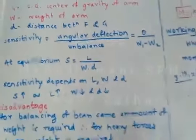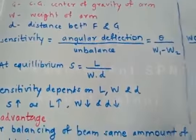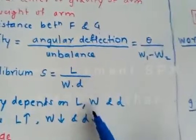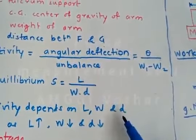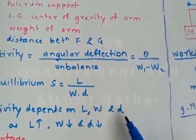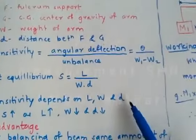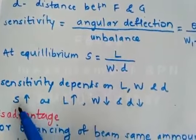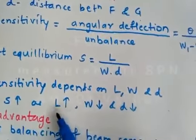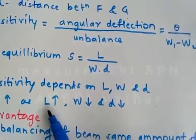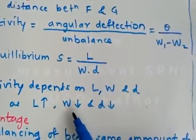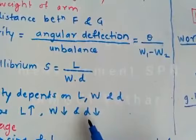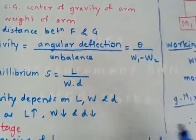Therefore, sensitivity depends only upon the length of the arm, the weight of the arm, and the distance between the fulcrum and the center of gravity. It does not depend upon the force or W1, W2 which is to be measured. Therefore, to increase sensitivity, we have to make the length L of the arm as large as possible, decrease the weight of the arm, and decrease the distance between the center of gravity and the fulcrum.